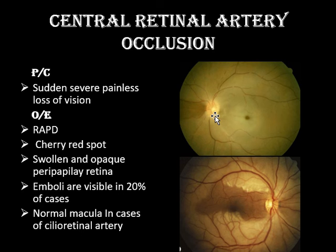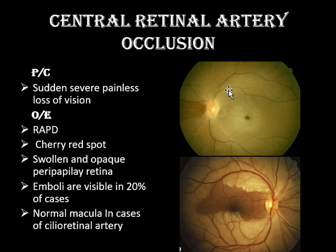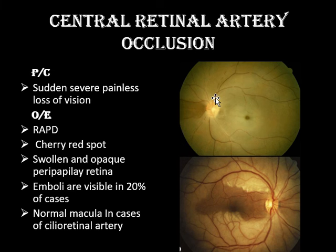The second type is central retinal artery occlusion. The presenting complaint is severe, sudden, painless loss of vision because it involves the macula. On examination, there is a profound relative afferent pupillary defect, a cherry red spot at the macula, with the rest of the retina edematous. There is narrowing of blood vessels and segmentation of the blood column. Emboli can be seen in 20% of cases.